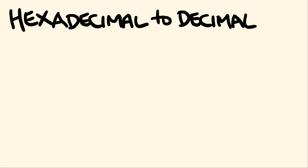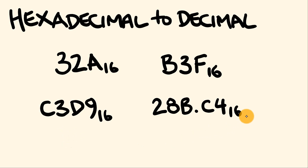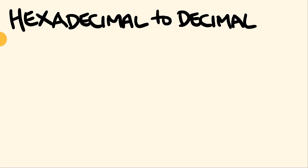G'day, welcome to Tech Maths Channel, I'm Josh. Today we're going to be looking at how to convert a hexadecimal number into its decimal equivalent. We'll be looking at these examples here, converting increasingly larger hexadecimal numbers as well as a decimal place hexadecimal number. So let's have a quick recap of what hexadecimal numbers and decimal numbers are — they are just different base counting systems.